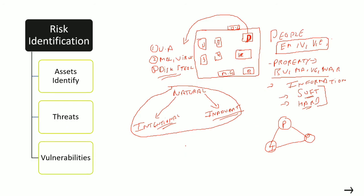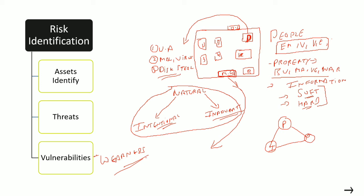Next we have vulnerabilities. Vulnerabilities are simply weaknesses. Every organization has some weaknesses, and every security setup has some weaknesses — these are called vulnerabilities. For example, a vulnerability could be that your access control is weak — your guards are not trained and cannot identify authorized versus unauthorized persons. This weakness in any system is what we call a vulnerability.